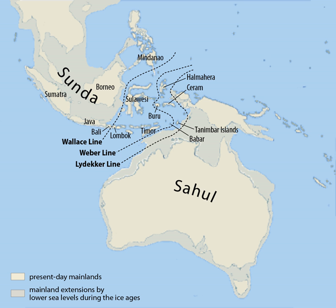All of Sundaland is within the tropics; the equator runs through central Sumatra and Borneo. Like elsewhere in the tropics, rainfall rather than temperature is the major determinant of regional variation. Most of Sundaland is classified as perhumid, or ever-wet, with over 2,000 mm of rain annually. Rainfall exceeds evapotranspiration throughout the year and there are no predictable dry seasons like elsewhere in Southeast Asia.